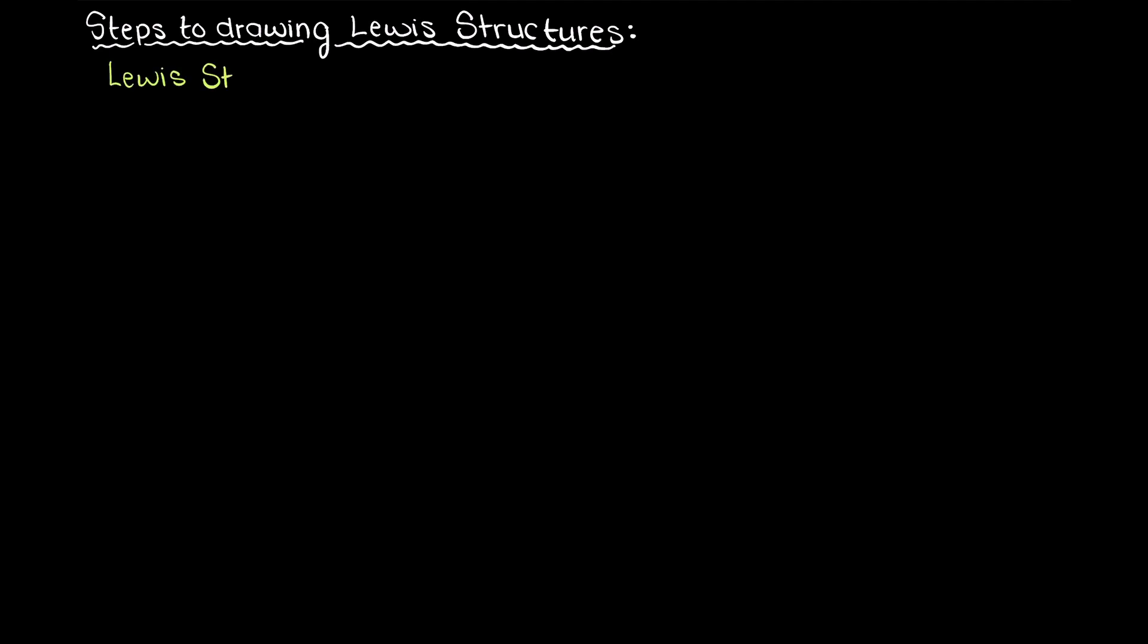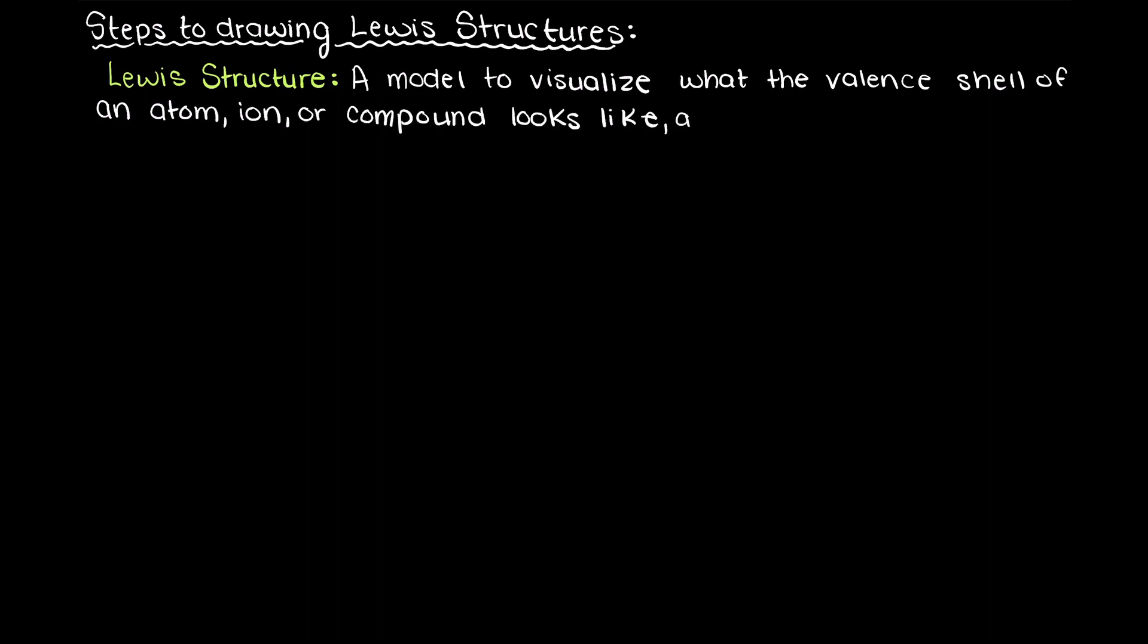So as we established in the last video, Lewis structures are a model for us to visualize what the valence shell of an atom, ion, or compound looks like and how it will react in the presence of another atom, ion, or compound. So, in this video let's talk about the steps to draw a Lewis structure.